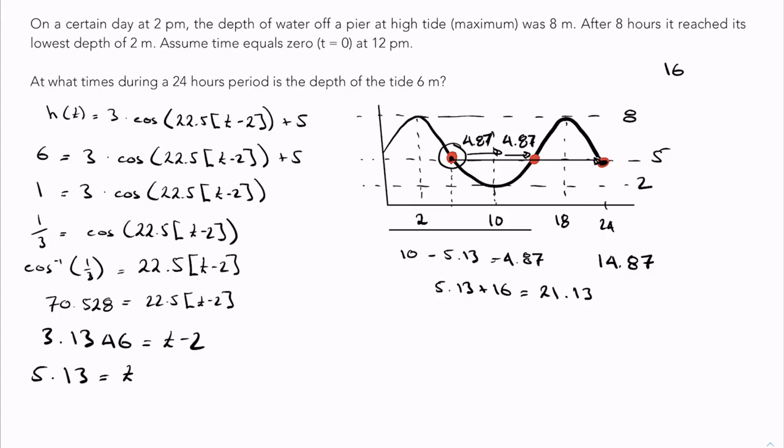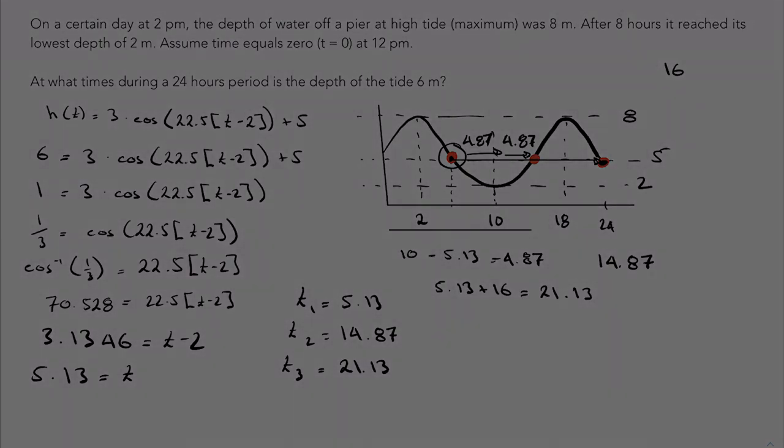So my times, let me just make sure I got this right here. 5.13 is my first one. 10 is my middle after 8 hours. So my times when I have a height of 6 meters is going to be 5.13. My second time is going to be 14.87, and my third time is going to be 21.13. And notice how that last one is within the 24 hour time interval, which is good enough.